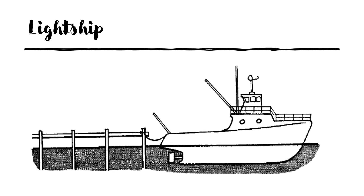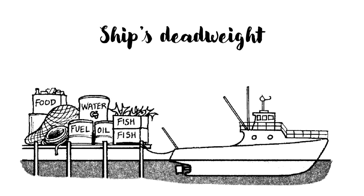Then we go on to light ship. Light ship is the actual weight of a vessel when it is absolutely empty — no fuel, fresh water, gear, supplies, cargo, nothing. That is called the light ship. Then we have dead weight. Dead weight is the actual amount of weight in tons that a vessel can carry when loaded to its maximum permissible draft.